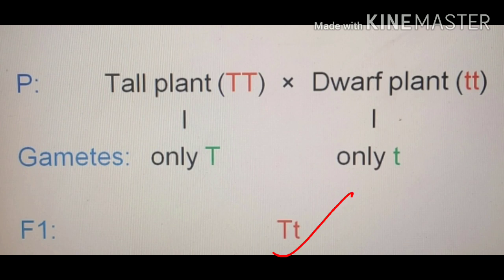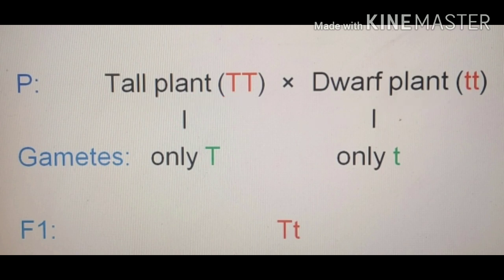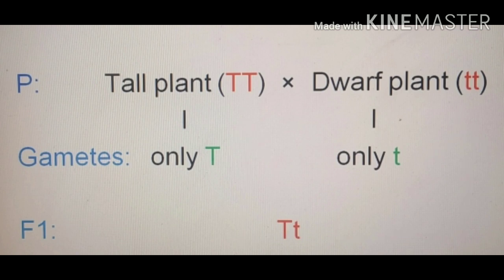From this cross, first clarify the idea of back cross. In back cross, the F1 progeny must cross with any one of its parents — either with the homozygous dwarf plant or the homozygous tall plant. Back cross is any cross that involves the F1 progeny with either of its parents, either the tall homozygous parent or the dwarf homozygous parent.